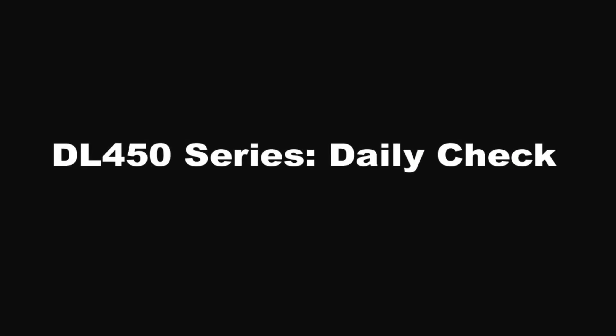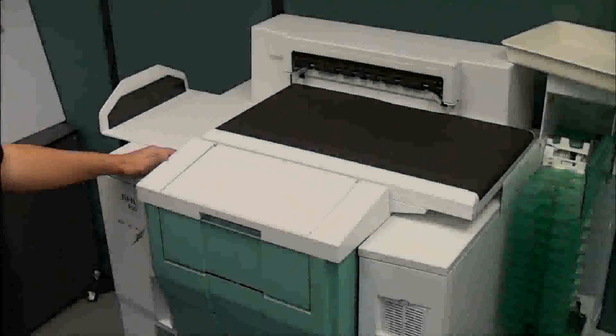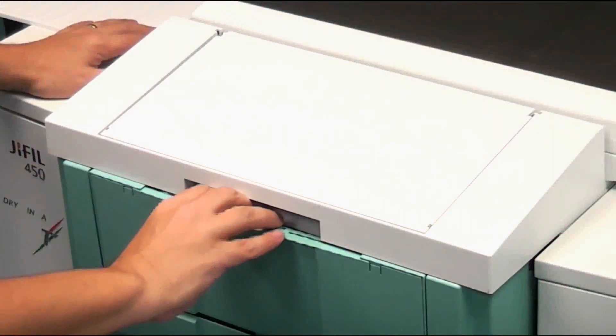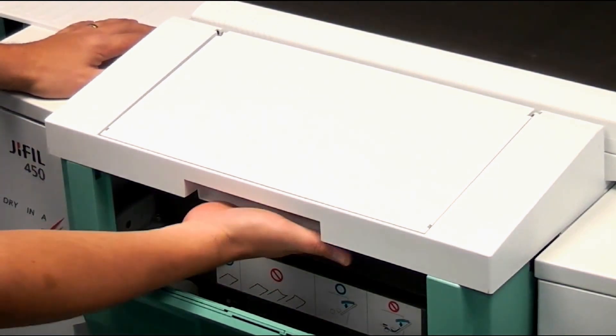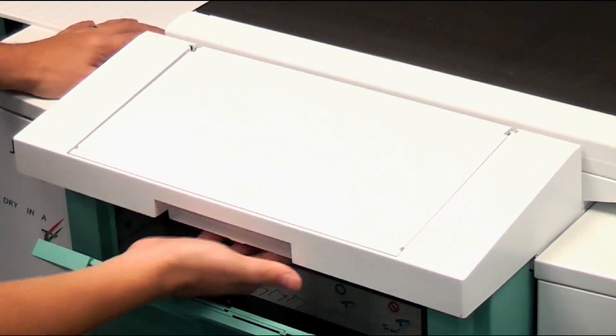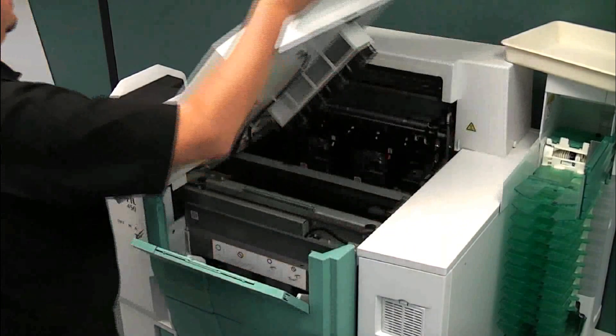DL450 series daily check: cleaning the print mount and absorbers. Open the long length print tray section and sheet supply tray. Hold the handle and stopper to release the lock, then pull out and lift the paper advance upper cover.